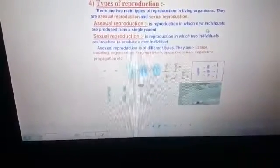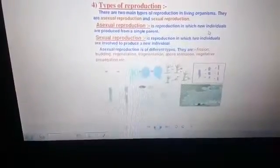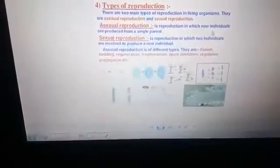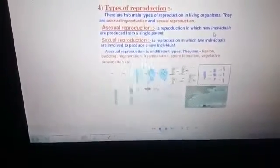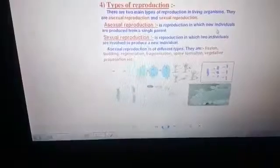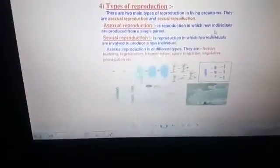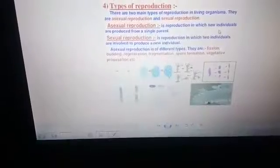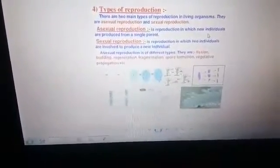The second type is sexual reproduction. In sexual reproduction, two individuals are involved to produce new individuals. Plants and animals are examples of organisms in which sexual reproduction occurs.